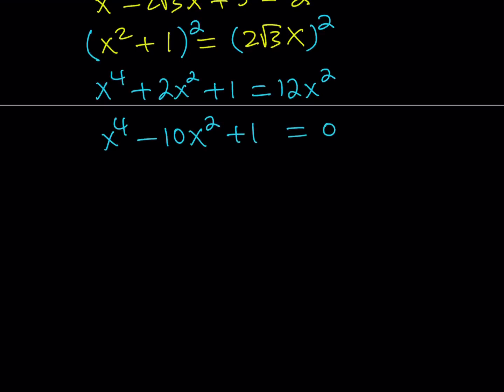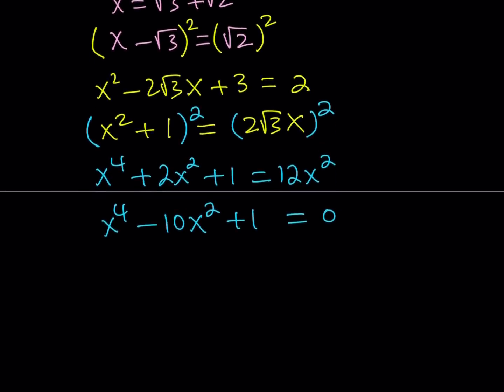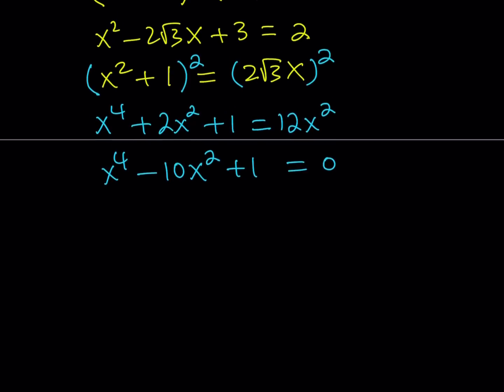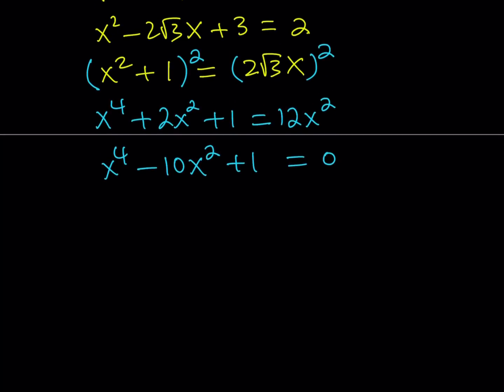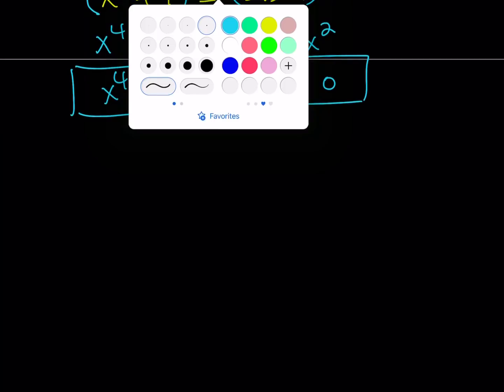That is x to the 4th minus 10x squared plus 1 equals 0. We started off with an x, and when you solve this equation, x is going to satisfy this equation. And x was root 3 plus root 2. So this equation definitely has one of the roots as this one. But we also introduced extraneous roots, which is fine. And we'll talk about this a little later. Towards the end, I'm going to talk about all the roots. This brings us to the end of the first method.